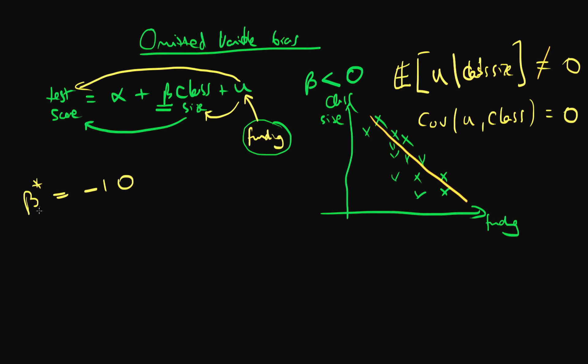Well, is this result likely to be upwardly or downwardly biased of the true value of beta? Well, in a sense, what class size is doing here is it's doing some of the work of funding.